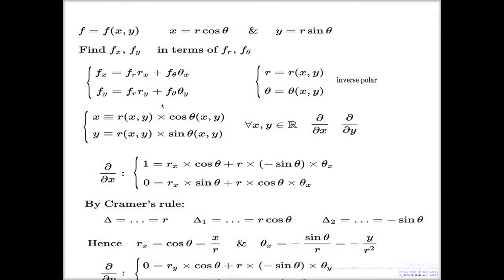I'd like to discuss second derivatives with the polar coordinate system. That's actually why I did the second solution, because of the knowledge we've just discovered about the derivatives of the inverse functions — the derivatives of the inverse polar map. We don't yet have a direct formula for the inverse polar map itself, but we do know its derivatives. I'm going to use them to find the second x and y derivatives in terms of second r and theta derivatives.